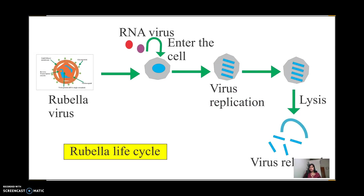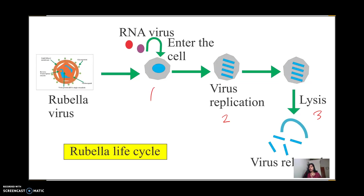To summarize the replication cycle: the RNA virus enters the host cell through endocytosis, then viral replication occurs in the cytoplasm of the host cell, and then the host cell undergoes lysis or breaks down and the virus is released through exocytosis secretions.